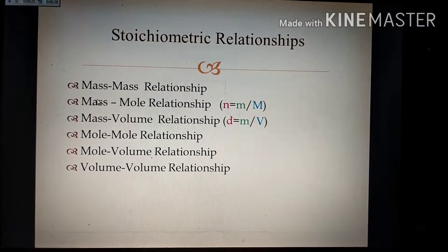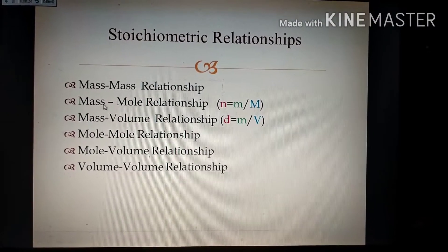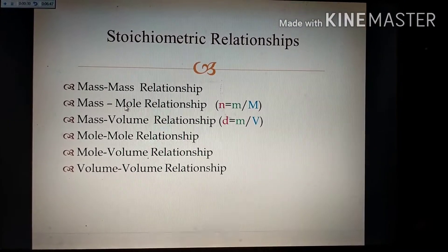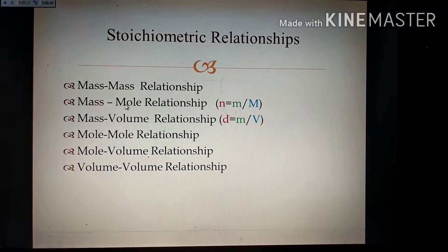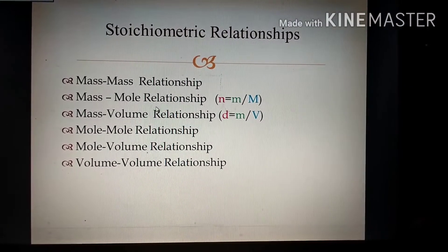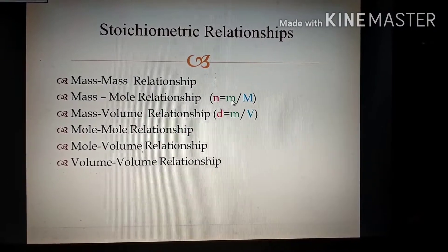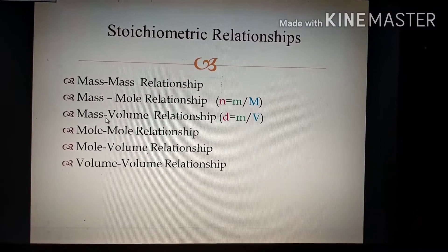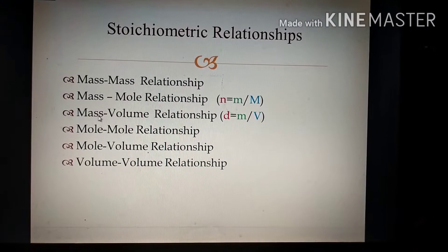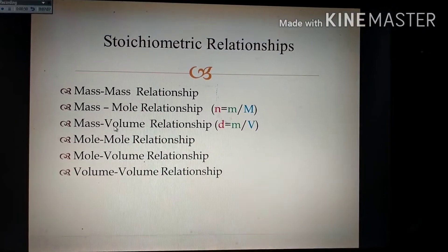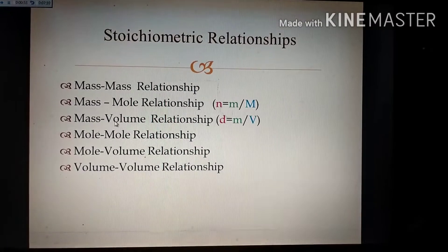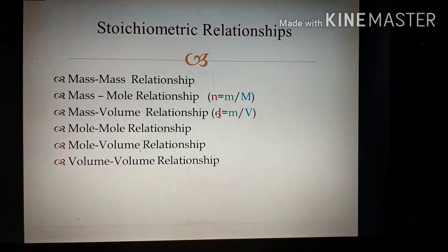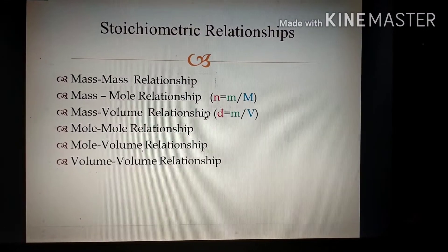The second relationship is the mass-mole relationship: if we know the mass of a reactant, we can determine the moles of product, or if we know the moles of product we can determine the mass of reactant, using the formula n = m / M. The third relationship is the mass-volume relationship: if we know the mass of reactant we can determine the volume of product, using the formula d = m / V.